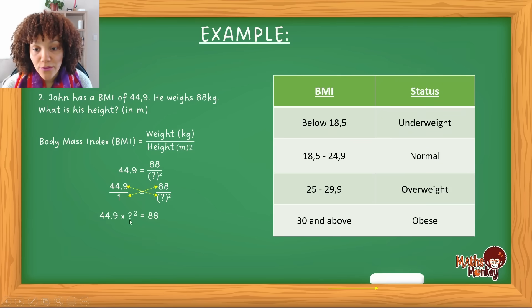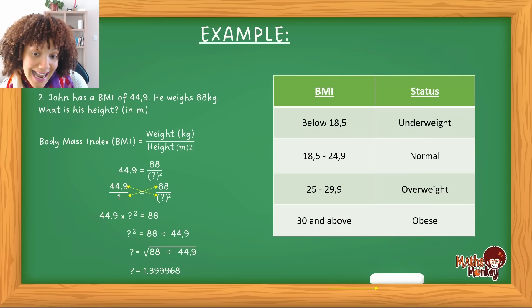Then if you look at this, we're trying to find the question mark, we're trying to find the height. So that means I need to take this over. But remember in the previous video, I showed you when you take it over, you have to do the opposite. So this is being multiplied. So I'm going to take it over and I'm going to divide it. And so I get an answer of, I'll divide this, but I need to find, this is squared. I need to find the square root of this. So that means my height is then 1.399968, which is then 1.4 meters.